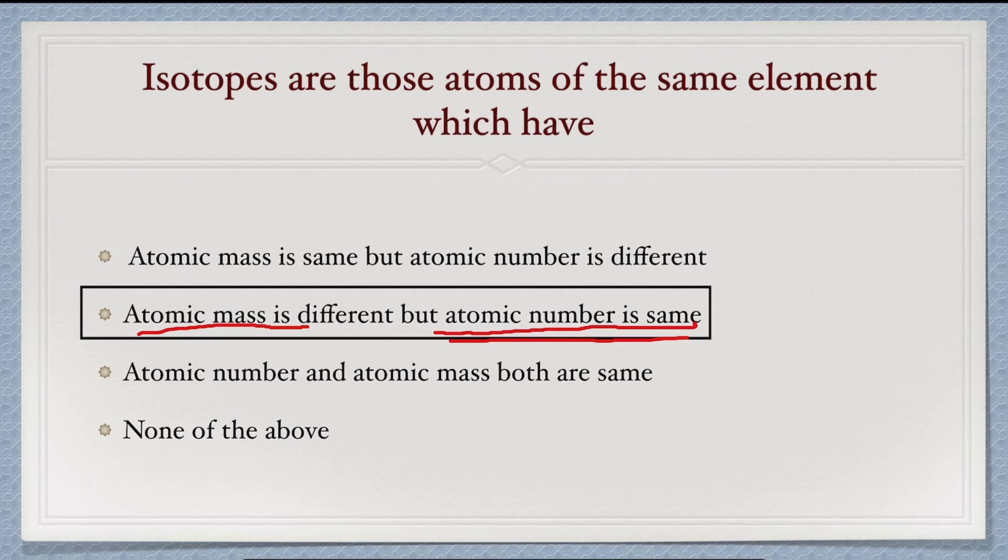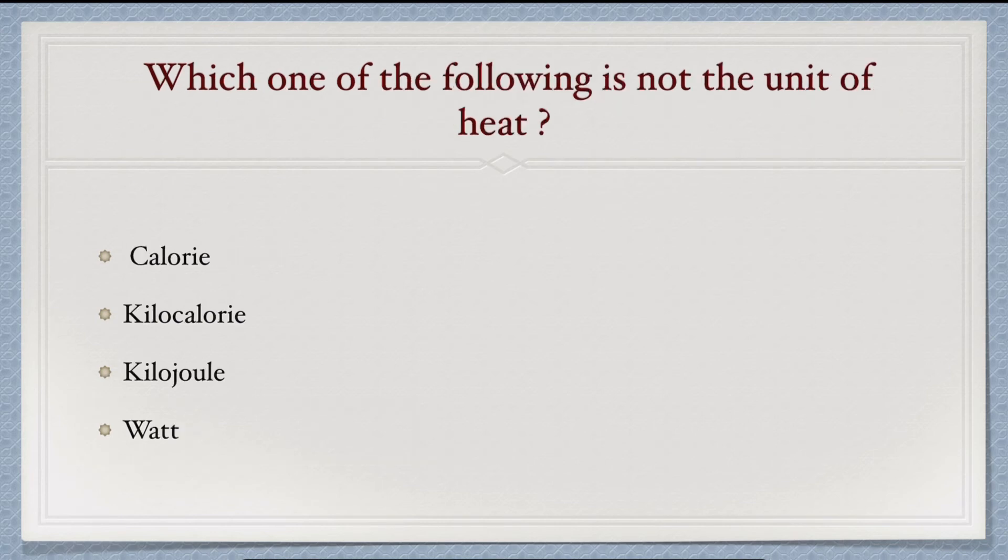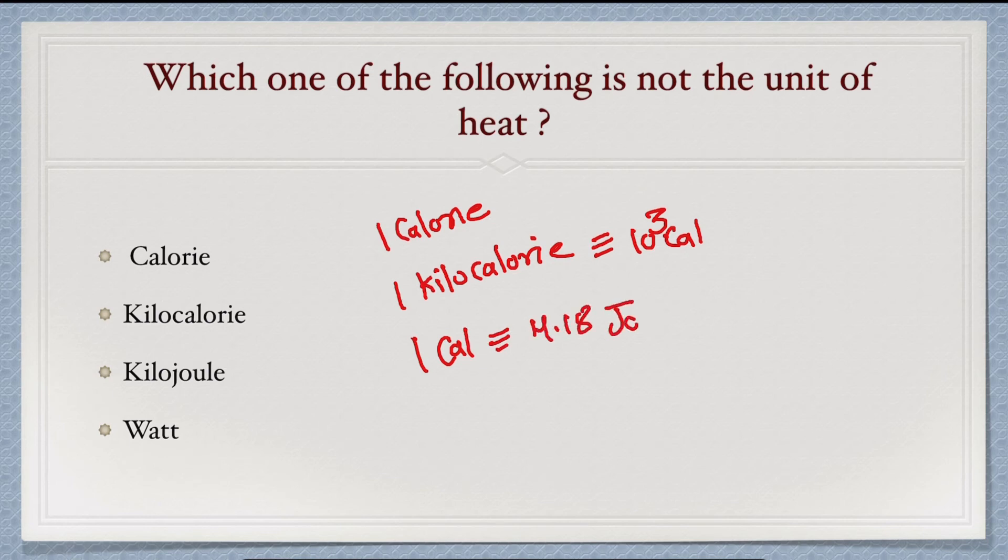Next question: which of the following is not a vector quantity? Vector quantities have magnitude as well as direction. Volume only has magnitude, so volume is a scalar quantity. Next question: which one of the following is not a unit of heat? Units of heat are calorie, kilocalorie (10 to the power 3 calories), and joule. One calorie equals 4.18 joules. What is not a unit of heat? Option fourth will be the answer.